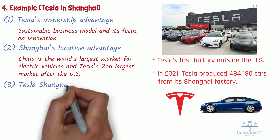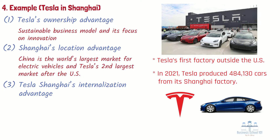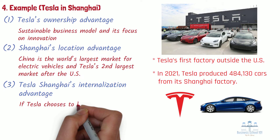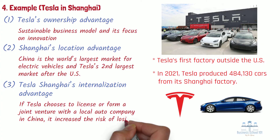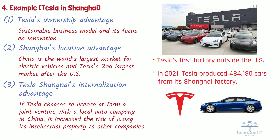Third, Tesla Shanghai's internalization advantage. As mentioned earlier, Tesla's major competitive advantages come from its unique technology, management system, and brand image. If Tesla chooses to license or form a joint venture with a local auto company in China, it increases the risk of losing its intellectual property to other companies. By internalizing all manufacturing activities and business records, Tesla can fully control its production process and better protect its core competitive advantages. That's why Tesla and most other auto companies tend to prefer wholly owned subsidiaries as their entry strategies.